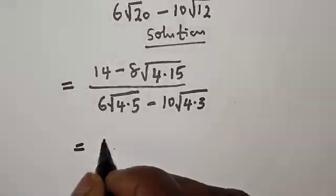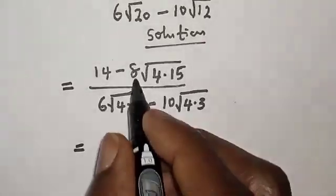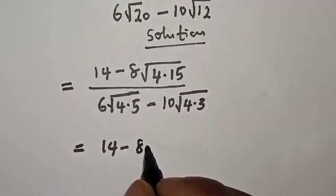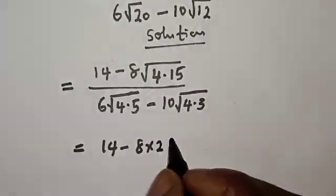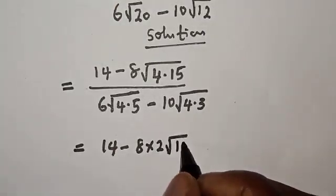Now this is equal to 14 minus 8 times the square root of 4, which is 2, then root 15.